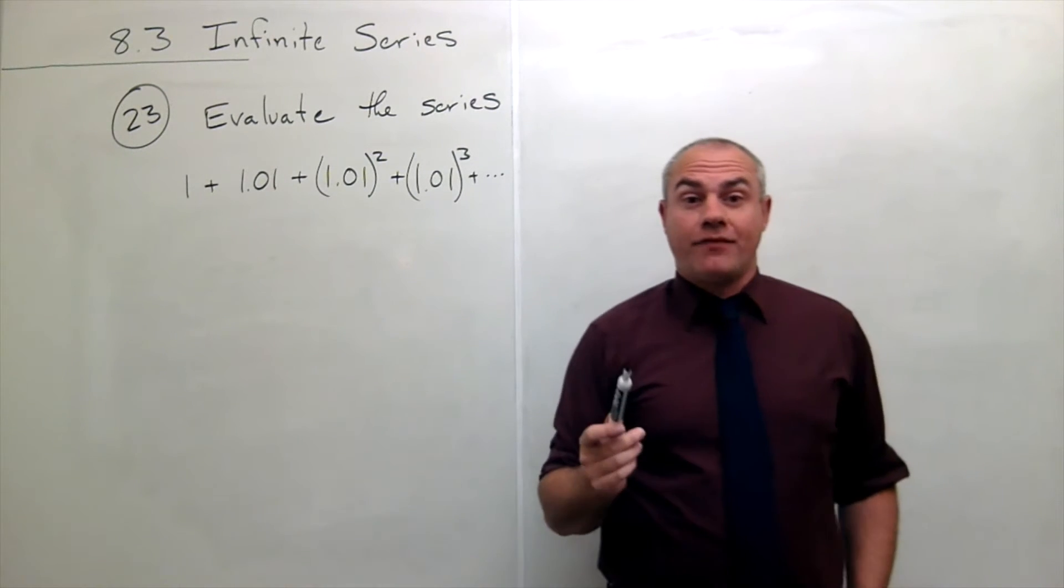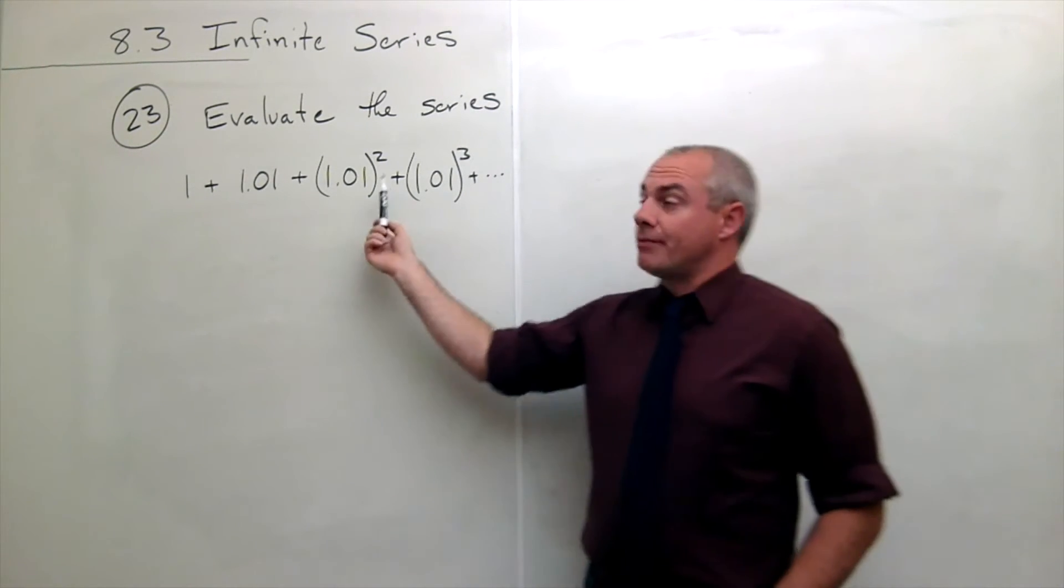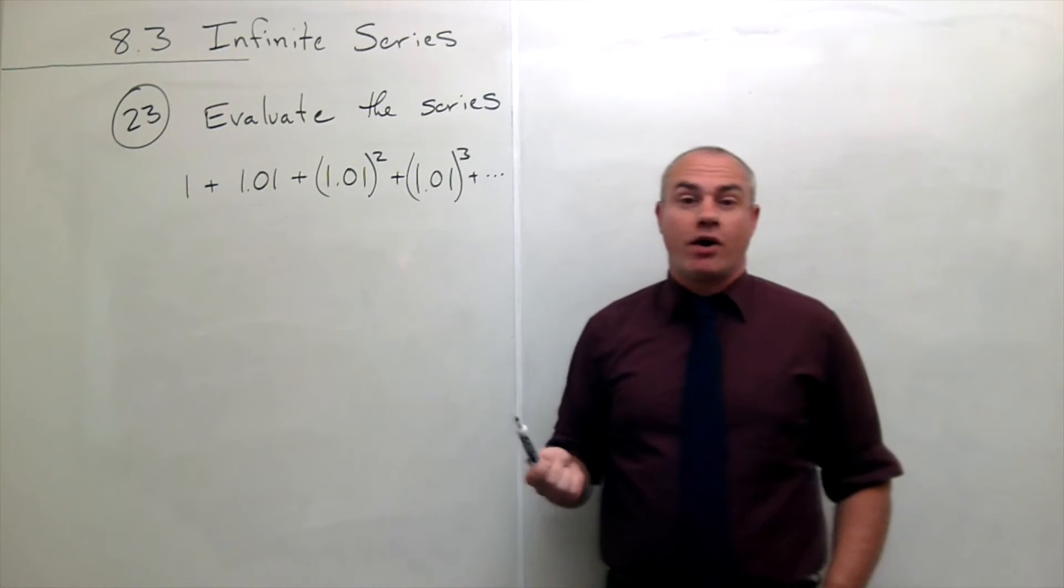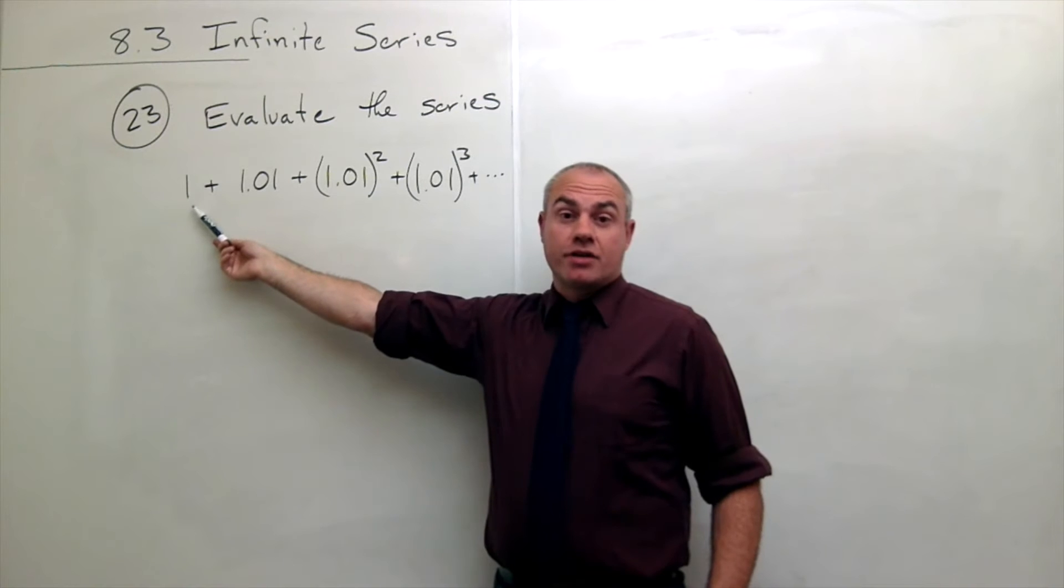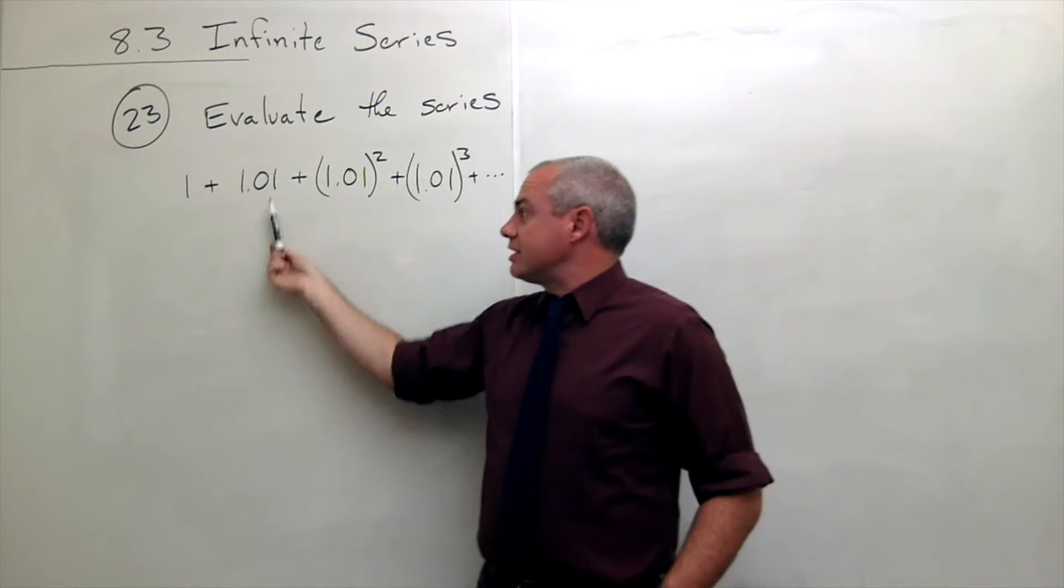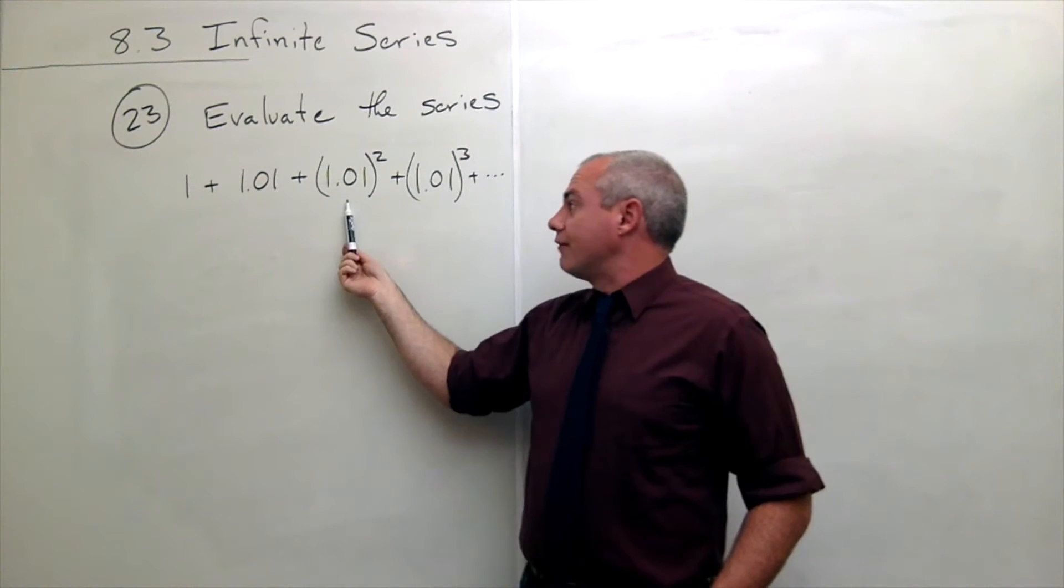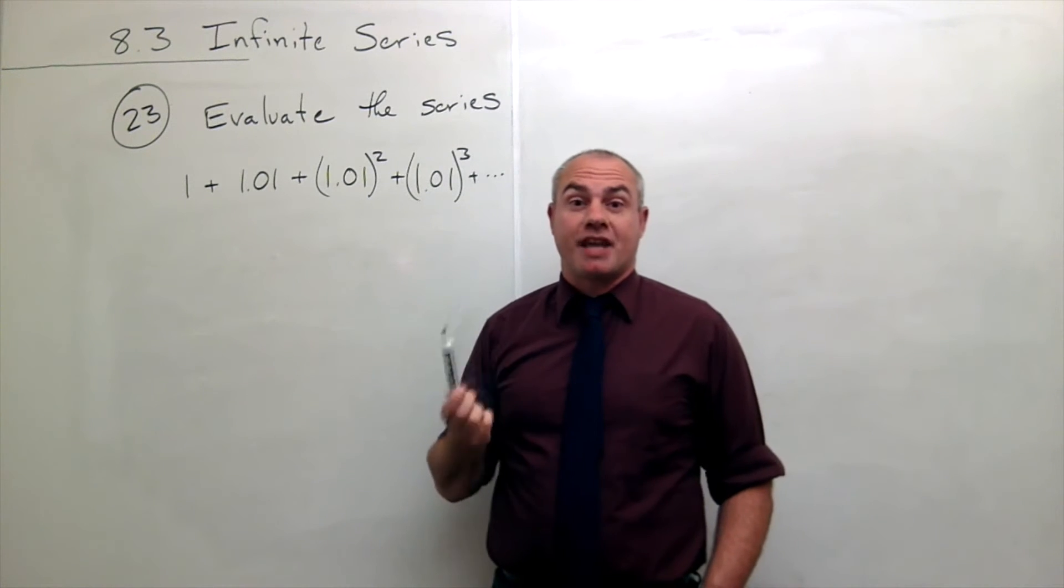What we can see right off the bat is this is a geometric series. How do we know? It's because it starts with something, it doesn't really matter what it starts with like 1, and then every time to get to the next term of the series I multiply by the same thing.